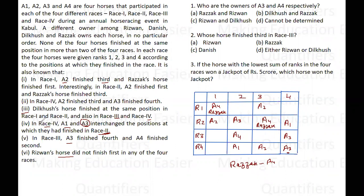Dilkhush's horse finished at the same position in race 1 and race 2, and also in race 3 and race 4. In races 1 and 2, the first position cannot be Dilkhush's horse because it is already given to Razak's horse. Similarly, the third position cannot be Dilkhush's horse because in race 2 the third position belongs to Razak's horse. So Dilkhush's horse can be either in second or fourth position.